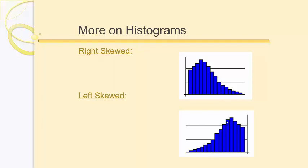Left skewed is the same thing except opposite — there are more observations at the high end and then a tail that shoots off to the left. Something like this might be the hours of sleep people get per night. The majority of individuals get between six and ten hours of sleep a night, and then there are very few people who only need two or three hours of sleep.